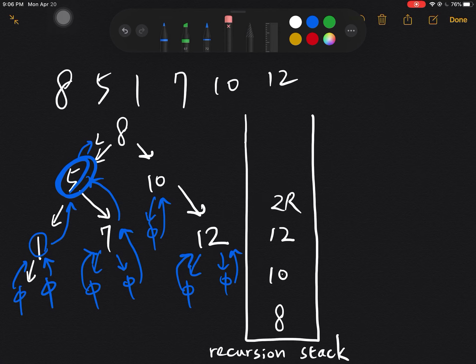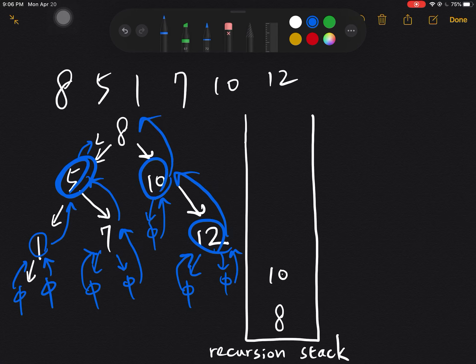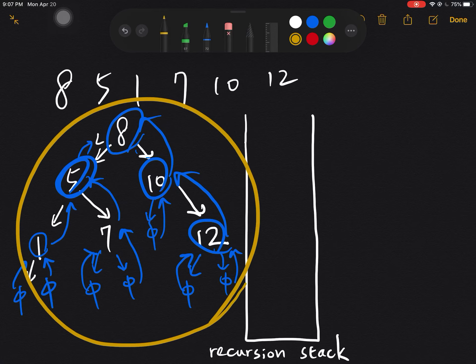And 12 right will return, return, then return. The 12 itself will return to 10, and then 10 will finally return to 8. And then 8 will be popped out, then we're finished constructing.